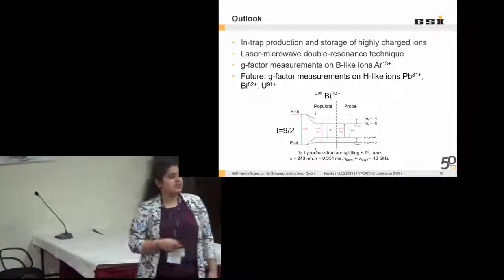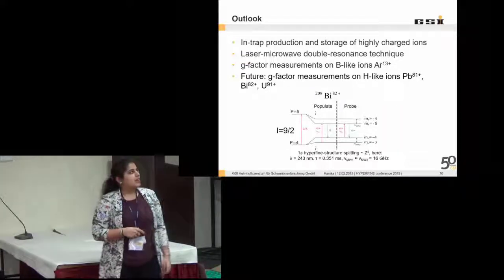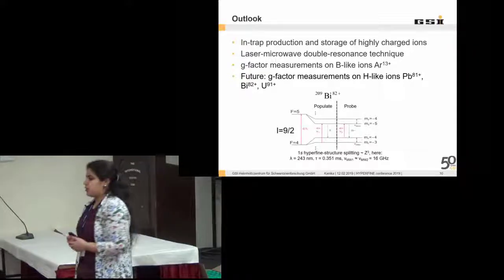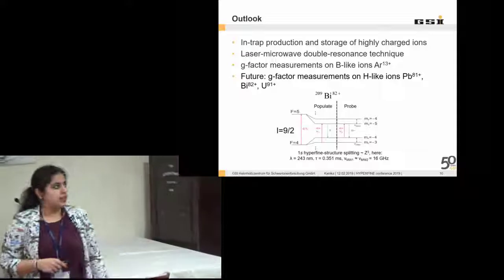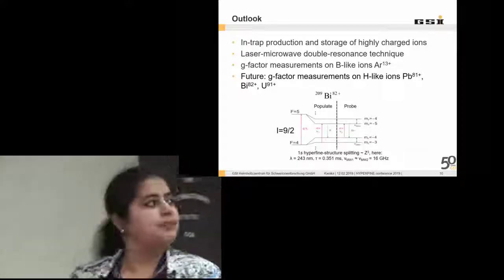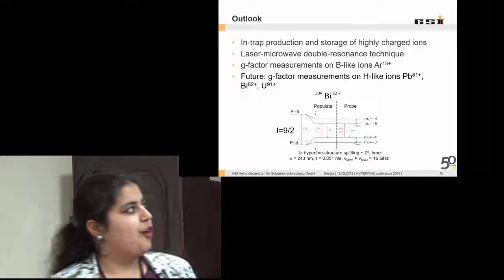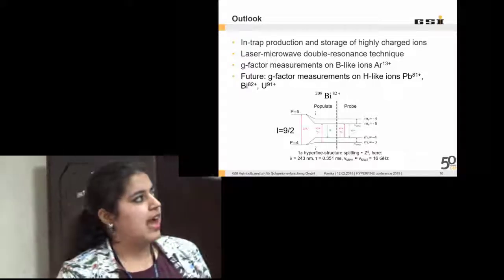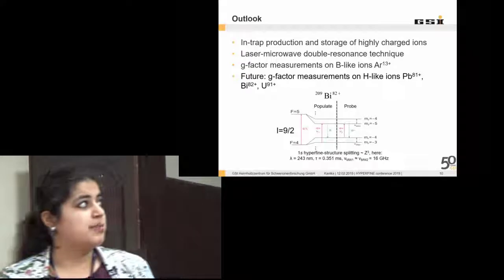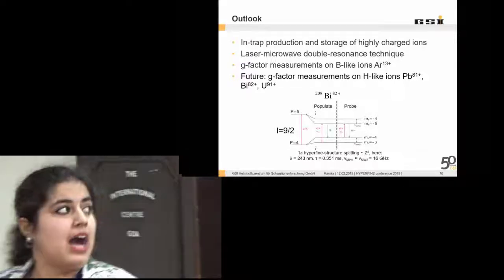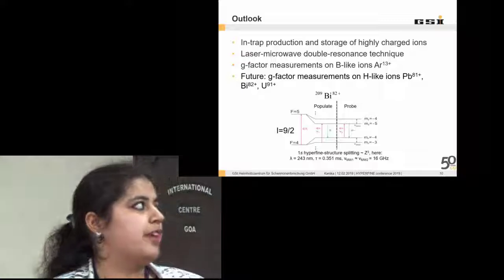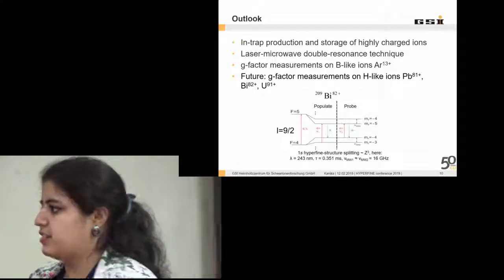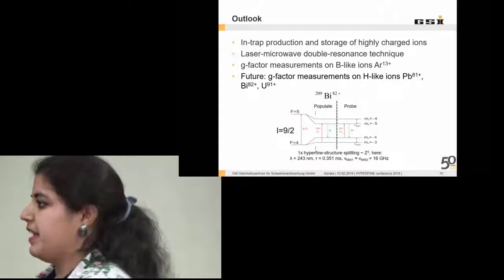Coming to the conclusions and outlook. Up to now we are successful in having the in-trap production and storage of highly charged ions. We have stored it for weeks. Now we are looking forward to the laser microwave double resonance technique to be implemented, which would lead to the measurement of g-factor for firstly boron-like argon ions. In the future we aim to measure it for lead, bismuth and uranium when we are able to connect it to the HITRAP facility. The connection is also underway. The last part of the beam line that connects the Artemis experiment to the HITRAP beam line is also under process.